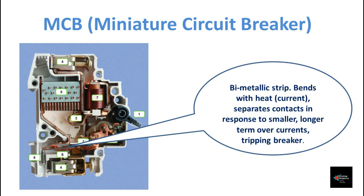When a small overcurrent is continuously passed through the MCB, the bimetallic strip inside will bend and trigger the actuator latch mechanism. This trigger will cause the contacts to separate.